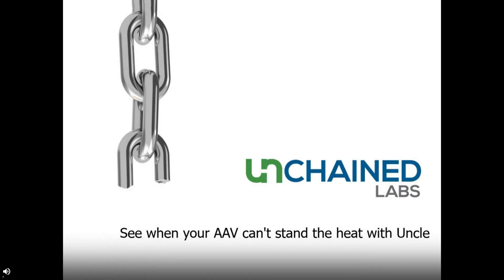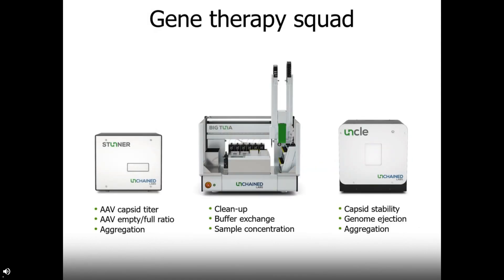Welcome to my talk: See When Your AAV Can't Stand the Heat with UNCLE. Unchained Labs has been helping out with our gene therapy squad for all kinds of problems and all kinds of gene therapy tech. We've been honing our tools to deliver answers and save boatloads of time for AAV and other viruses. Stunner quickly delivers answers on tighter and empty-fill ratio, Big Tuna takes care of buffer exchange and concentration, and UNCLE is the key to all kinds of stability insights — that's exactly what we'll be checking out today for AAV.